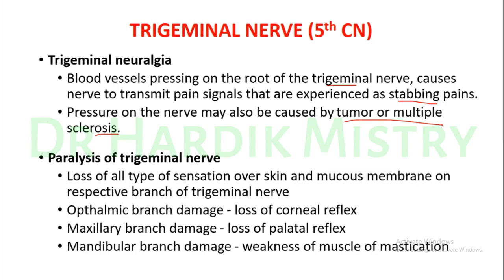In conditions of paralysis of the trigeminal nerve, there will be loss of all types of sensation over the skin and mucous membrane supplied by the respective branches. If the ophthalmic branch is damaged, there will be loss of the corneal reflex. Maxillary branch damage results in loss of the palatal reflex, and mandibular branch damage causes weakness of the muscles of mastication. These specific tests help identify which branch — ophthalmic, maxillary, or mandibular — has been damaged.